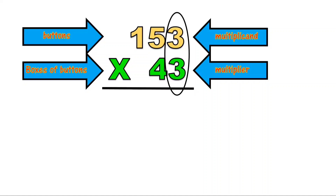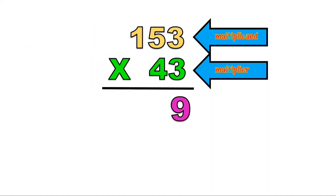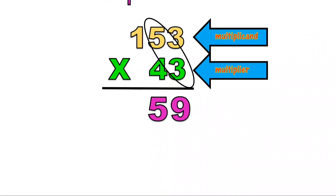Now, let's multiply first at the ones place, from right going to the left. 3 times 3 is equal to 9. Now, let us multiply the ones digit of the multiplier, which is 3, and the tens digit of the multiplicand, which is 5. 3 times 5 is equal to 15.